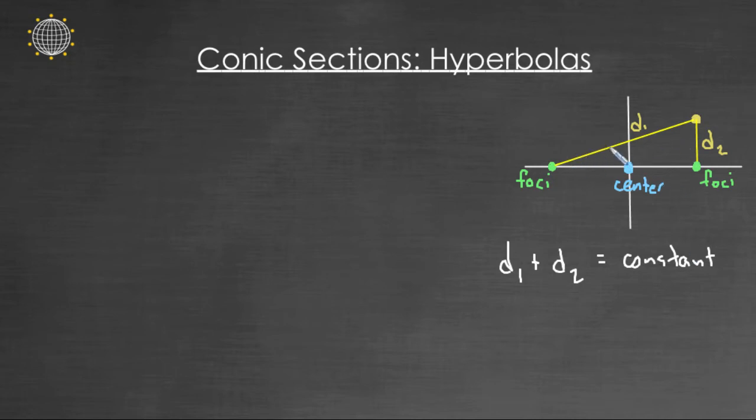So if distance one got longer, distance two would have to get shorter, so that the sum stays constant and that's what pulls it back around. And that's what gives us this elliptical type look, is as distance one gets smaller, distance two has to get longer so that the sum stays constant.